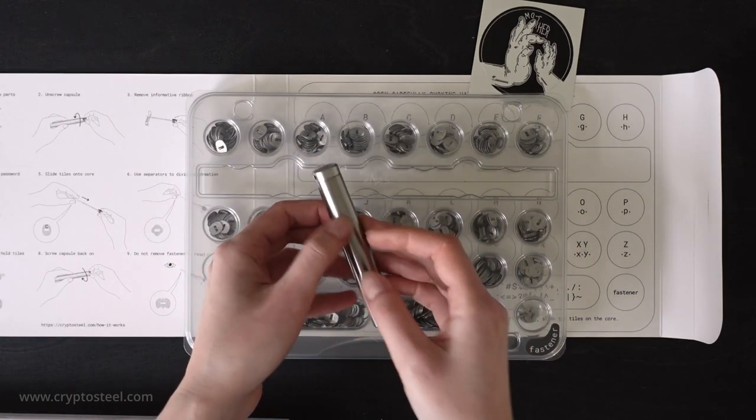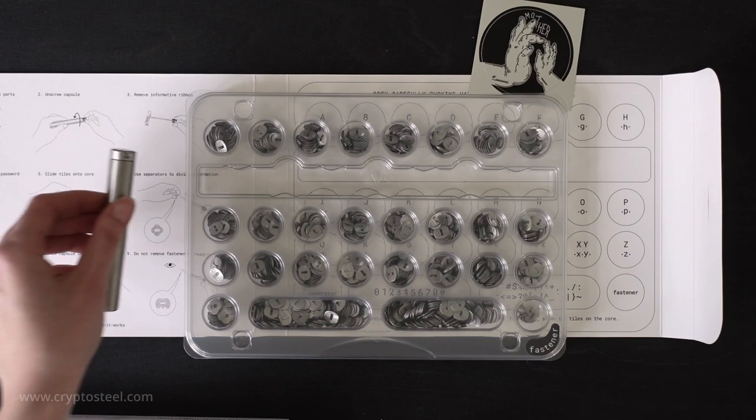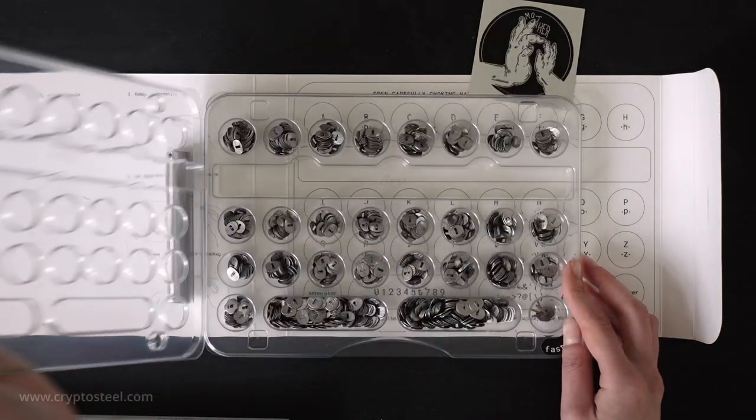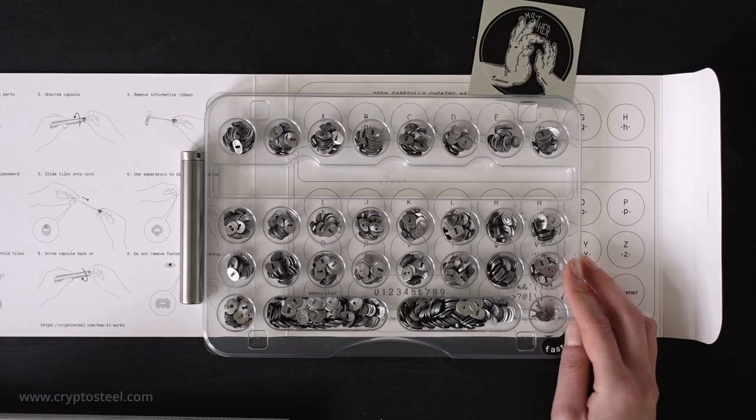The set contains three types of metal elements that will be put on the core. The solo set contains over 800 character tiles. The set is partially randomized to enhance your security.